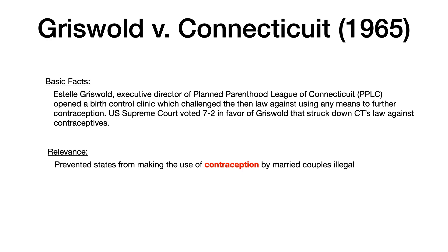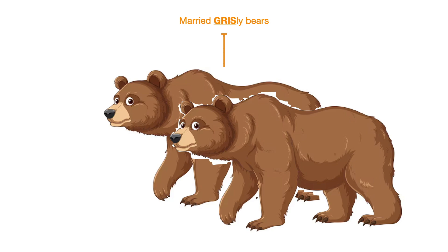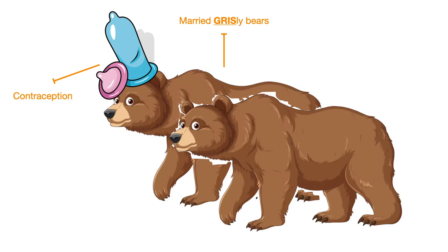Griswold makes me think of grizzly bears. Here we have a married grizzly bear couple, because this case involved specifically married couples, and you want to associate this with it being legal to use contraception. We'll place a condom on the head of one of the grizzly bears — this is our contraception and our grizzly bears. So Griswold equals contraception is legal in married couples.